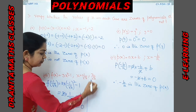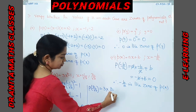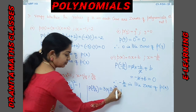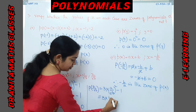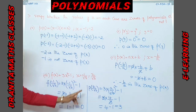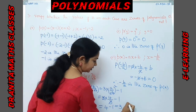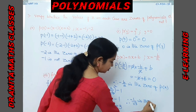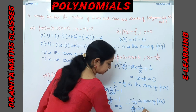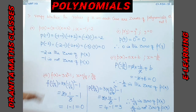Now checking x = 2/√3: 3 × (2/√3)² - 1 = 3 × (4/3) - 1 = 4 - 1 = 3. We did not get 0, so x = 2/√3 is not a zero of the polynomial. Therefore, only x = -1/√3 is a zero of f(x), and x = 2/√3 is not. Please pause the video and note it down.